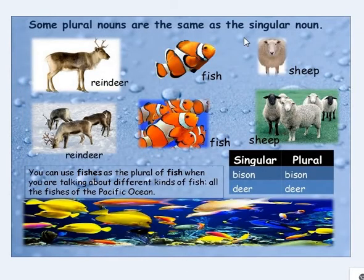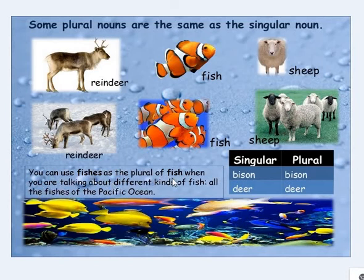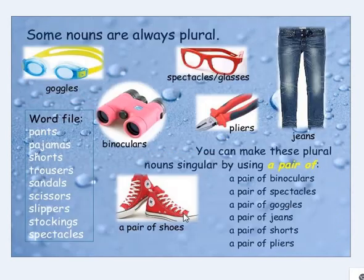Some plural nouns are the same as the singular noun. For example: reindeer/reindeer, fish/fish, sheep/sheep, bison/bison, deer/deer. You can use 'fishes' as a plural of fish when you are talking about different kinds of fish, such as 'all fishes of the Pacific Ocean.' These are something you have to learn.